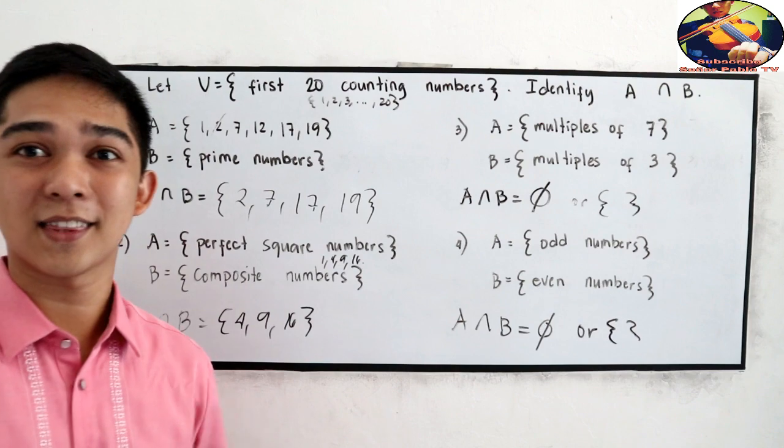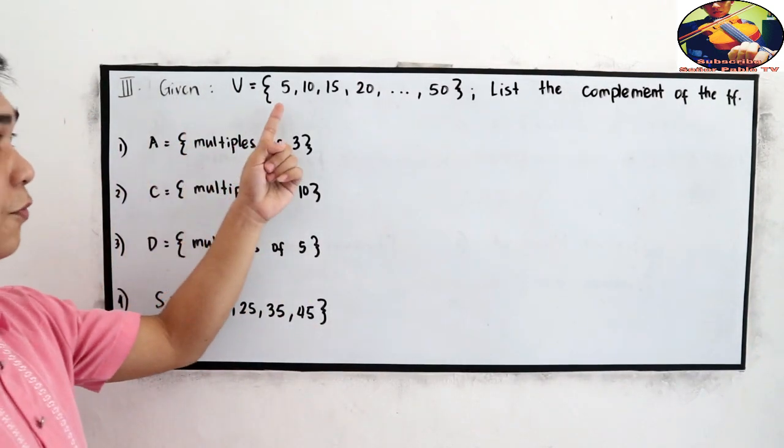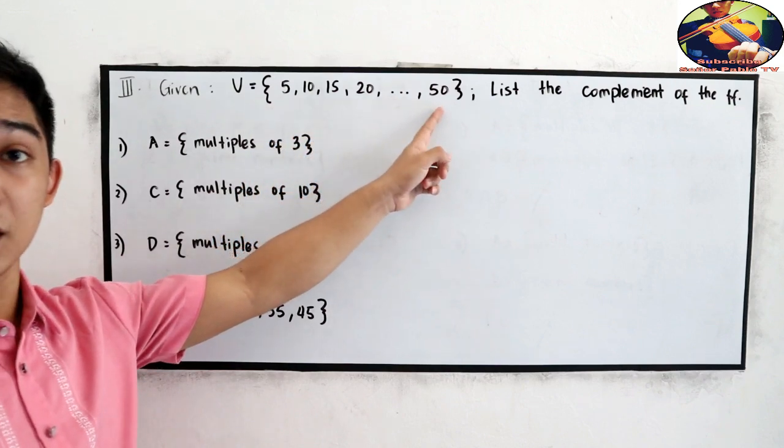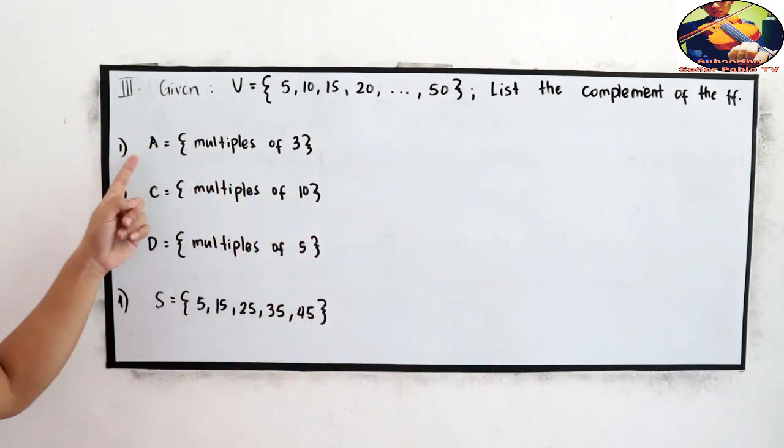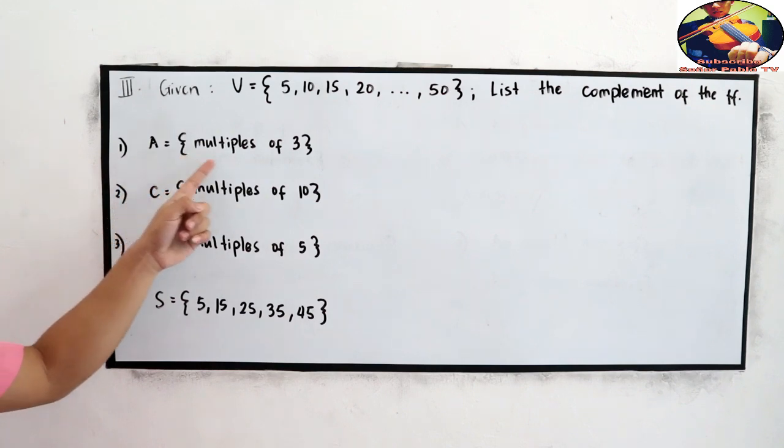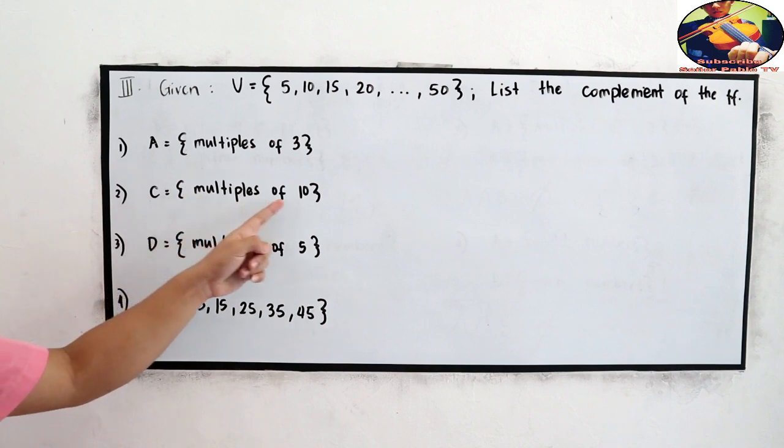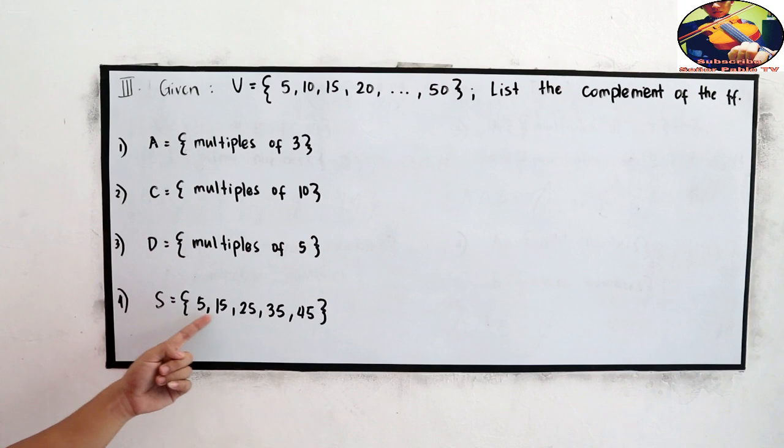Now, let's proceed to complement. This time, let's have the given U is equal to 5, 10, 15, 20. The ellipsis sign up to 50. List the complement of the following sets. Number 1, set A is the multiples of 3. Number 2, set C is the multiples of 10. Number 3, set D is the multiples of 5. Number 4, set S is 5, 15, 25, 35, and 45.